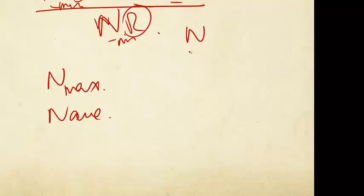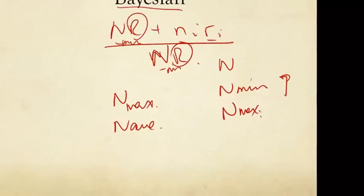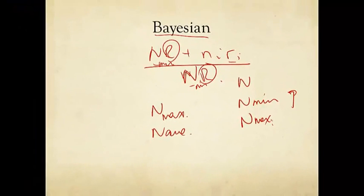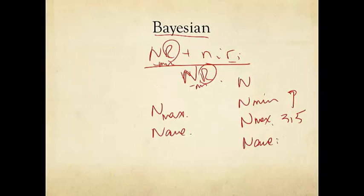So we don't know whether we should use n, the total number, or nmin, which is 8 or 7, or nmax, which is 315, or n average, which is 99. And this total is 1,986. Which factor shall we use as this n in the formula of Bayesian adjustment?